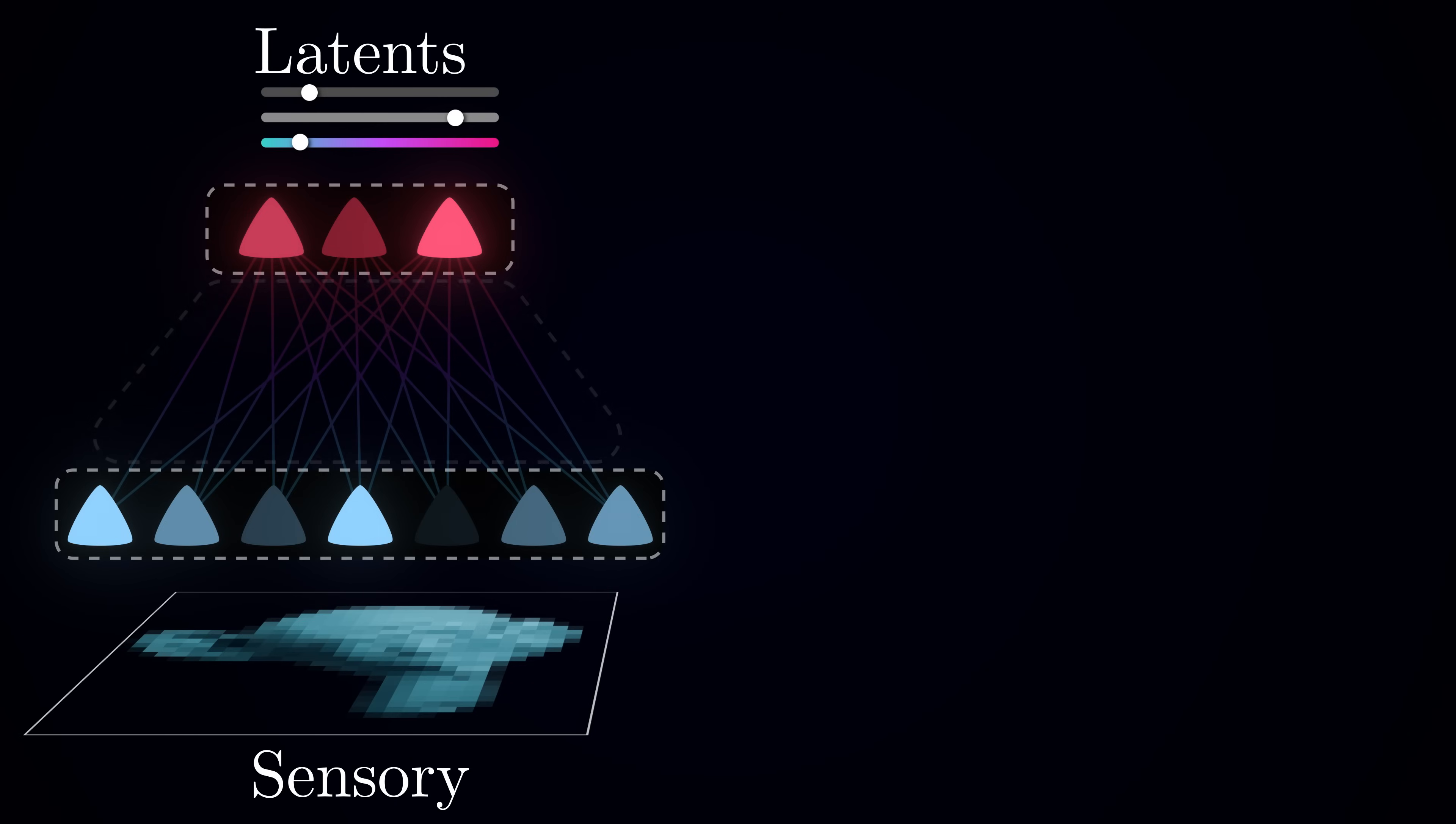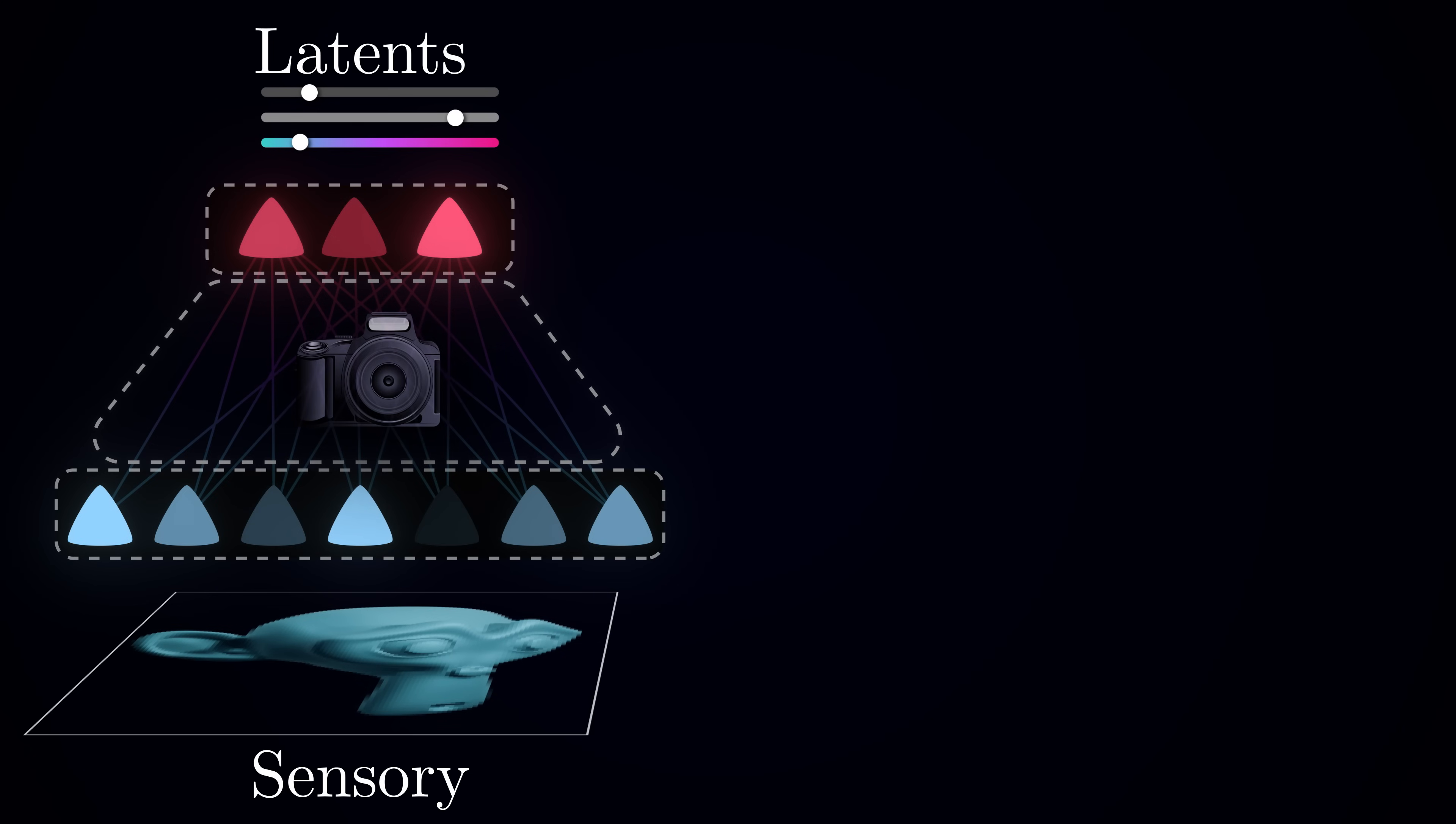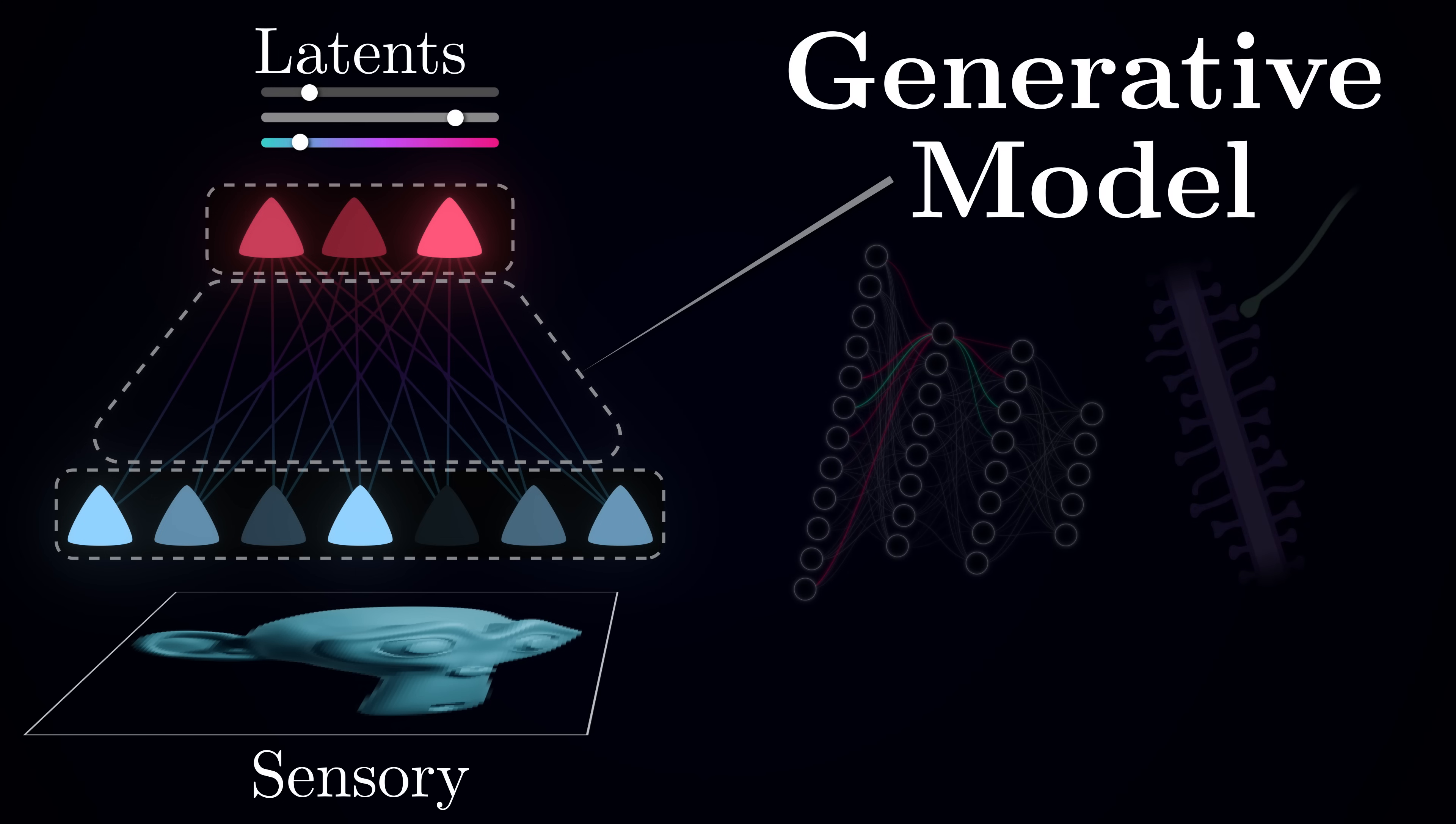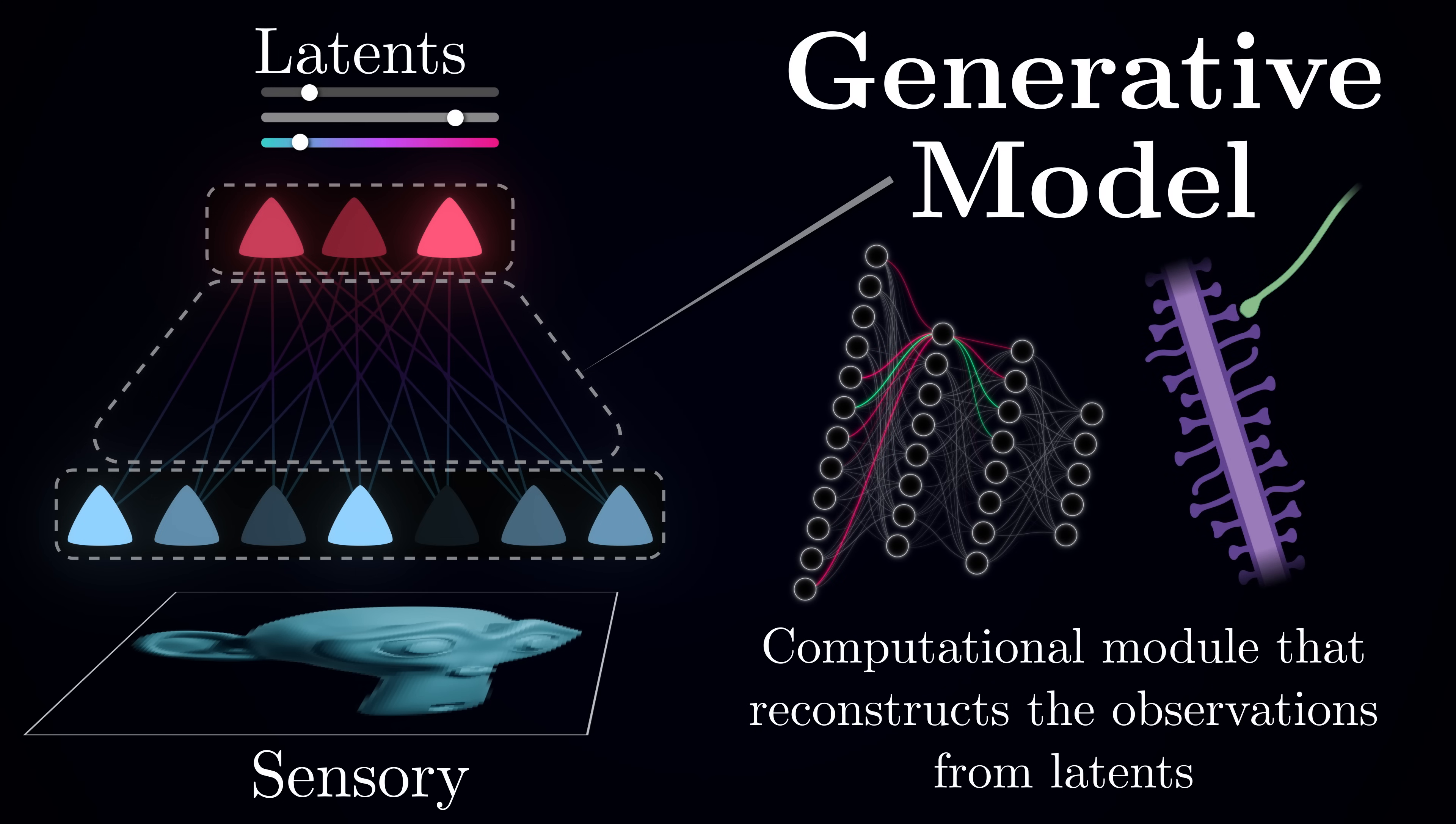And the rendering process, the complex computation under the hood of the graphics software that transforms slider positions to rendered pixels, corresponds to a so-called generative network or generative model inside the brain. You can think of this generative model as connection weights between latent and sensory neurons, plus additional neural circuits that carry out this reconstruction and uncompress the latent representation.